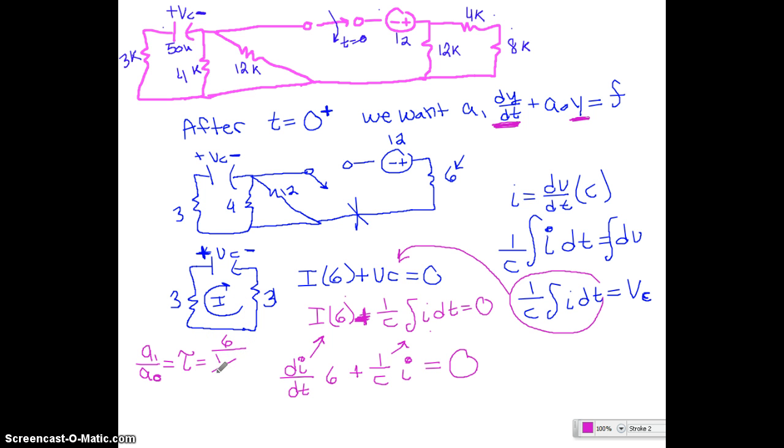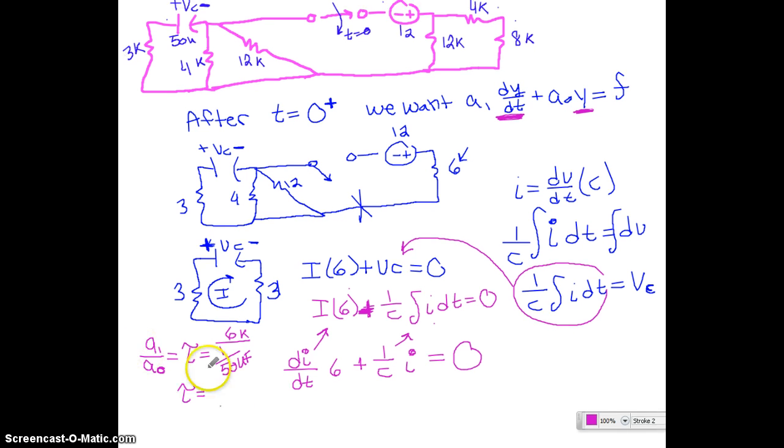And the capacitance here was 50 microfarads and then the resistance was kiloohms. So make sure we keep that k in there. I kept the units off because normally they don't matter that much. But in this one it does because we have the k and then we have the microfarads down there. So if we multiply this out our tau is going to be equal to 0.3.